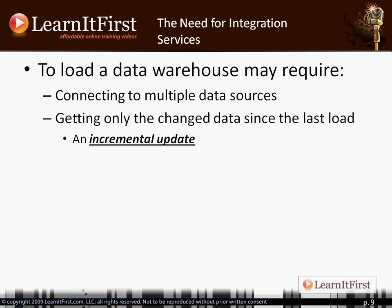We're connecting up to all these different data sources, and in some cases we might only be getting the changes since the last time we loaded the data warehouse. For example, if we're loading once a week on Sunday morning and we have a 250-gigabyte database, we don't want to load the entire 250 gigabytes every week — we only want to load the changes since last week. That's what an incremental update is, also called a delta — just the changes since the last load.